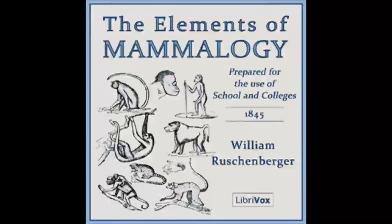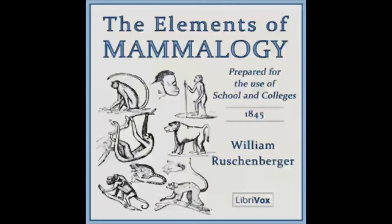The number of different animals inhabiting the surface of the globe is so great that in order to study them with ease, it is necessary to establish amongst them divisions and subdivisions. Each of the groups thus formed should be characterized in such a manner as to enable us always to recognize with certainty the individuals which belong to it, and the group should be designated by a particular name. The assemblage of these divisions and subdivisions constitutes what is called a classification.